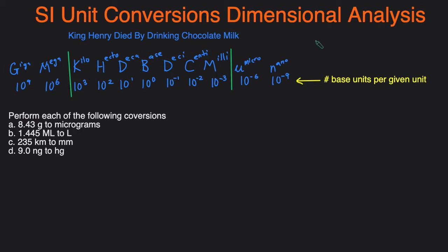Base is when there's no prefix — like grams or liters — and that's 10 to the 0. When you move toward the larger side, you add one each time: deca is 10 to the 1, hecto is 10 to the 2, kilo is 10 to the 3. When you move the other way, you subtract one each time: deci is 10 to the negative 1, centi is 10 to the negative 2, milli is 10 to the negative 3.